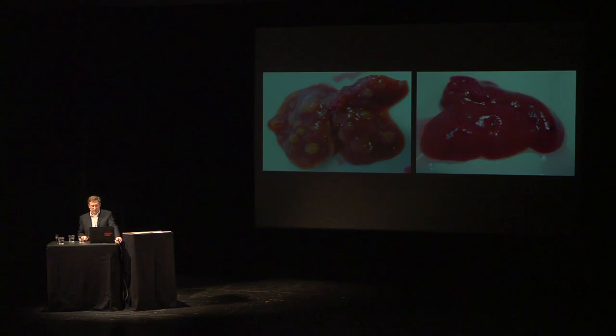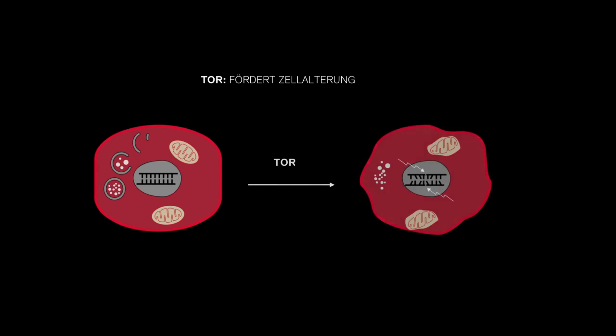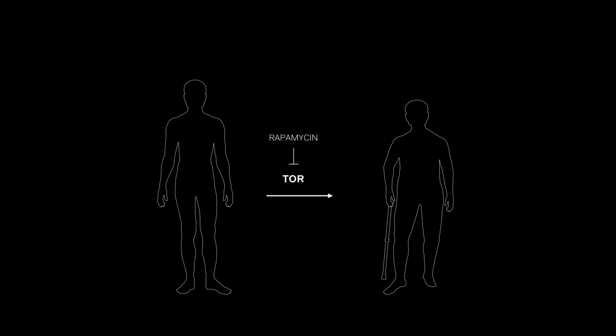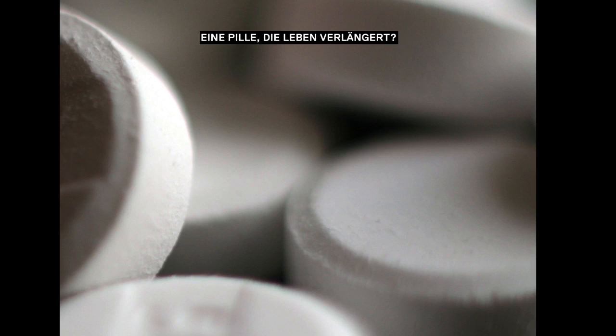TOR has another interesting role in cells: it drives aging of the cell. So it causes the cell to age — this is a natural process driven by TOR. This raises an interesting possibility: if we block TOR with rapamycin, we might be able to block the aging process. So now we can start a very philosophical discussion — do we want to extend lifespan? And if so, for how long?